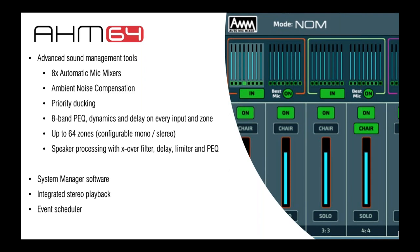These processing output channels can be configured as mono or stereo zones, or reserved for speaker processing with crossover filters, delay, limiters, PEQ, and levels for each crossover output. There's also integrated stereo playback for WAV, MP3, or FLAC files with about 3 GB of internal memory, an event scheduler, and the System Manager software will be Windows and Mac compatible, which is quite unique in the installation market.